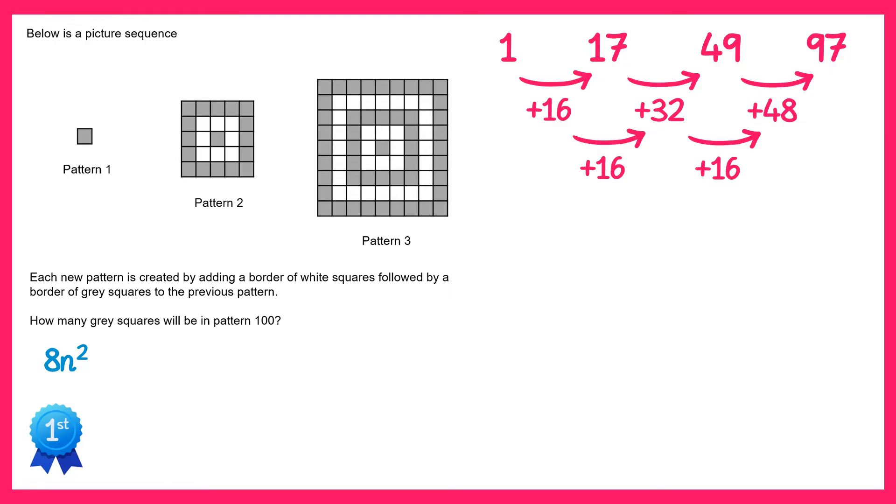8n squared just means do 8 times the square numbers. So if we take some square numbers, 1, 4, 9, 16, and so on, and then just multiply those by 8.